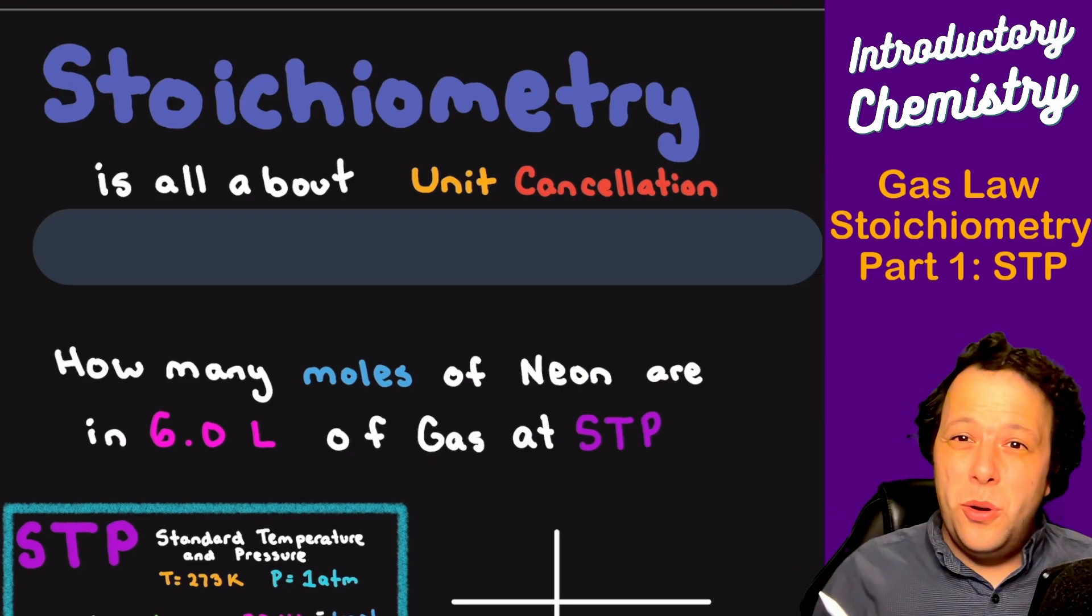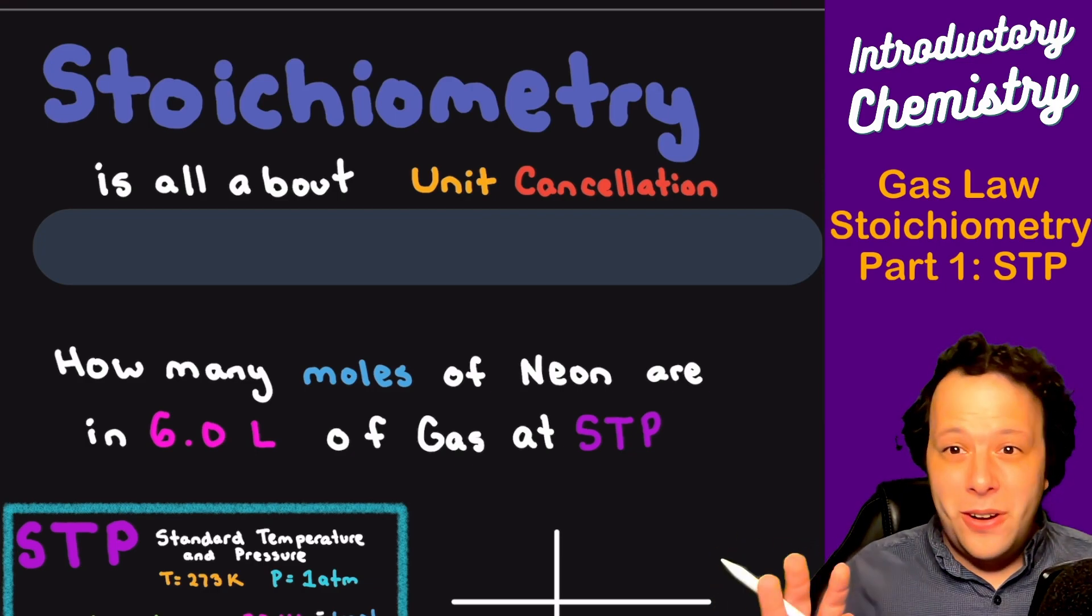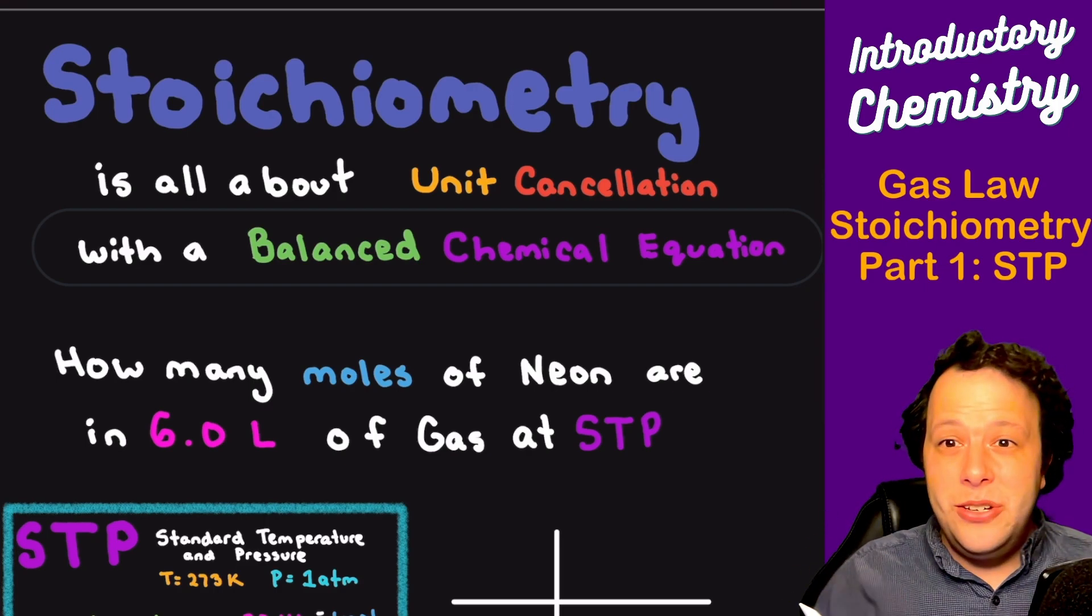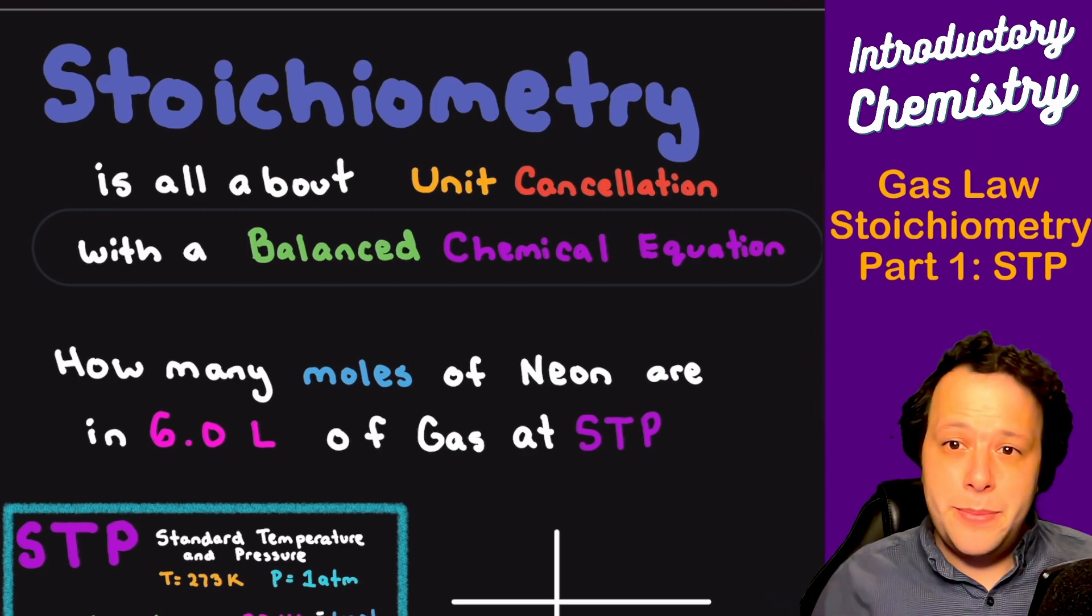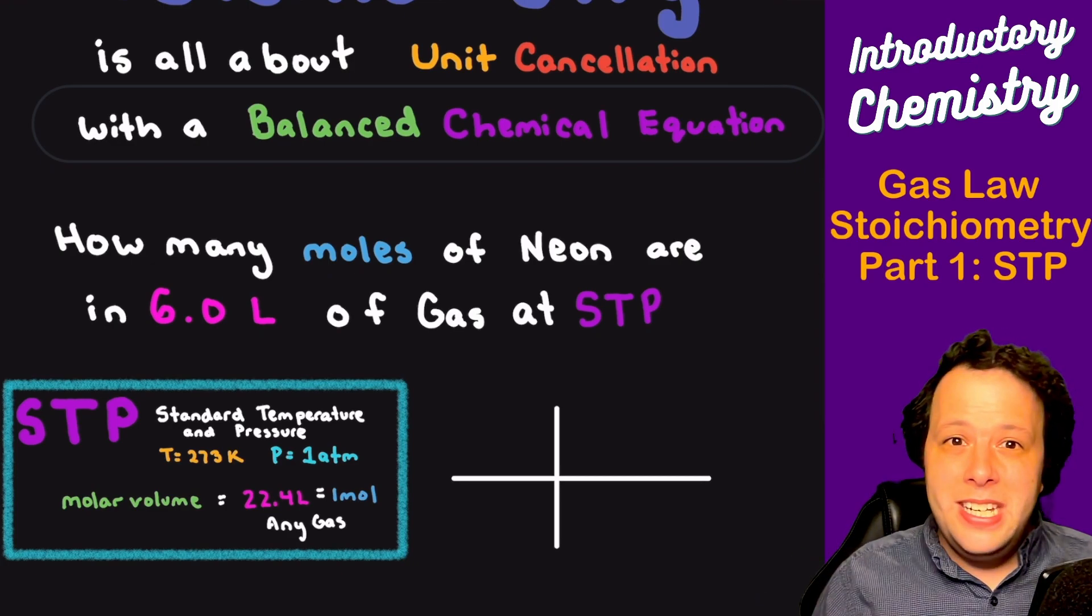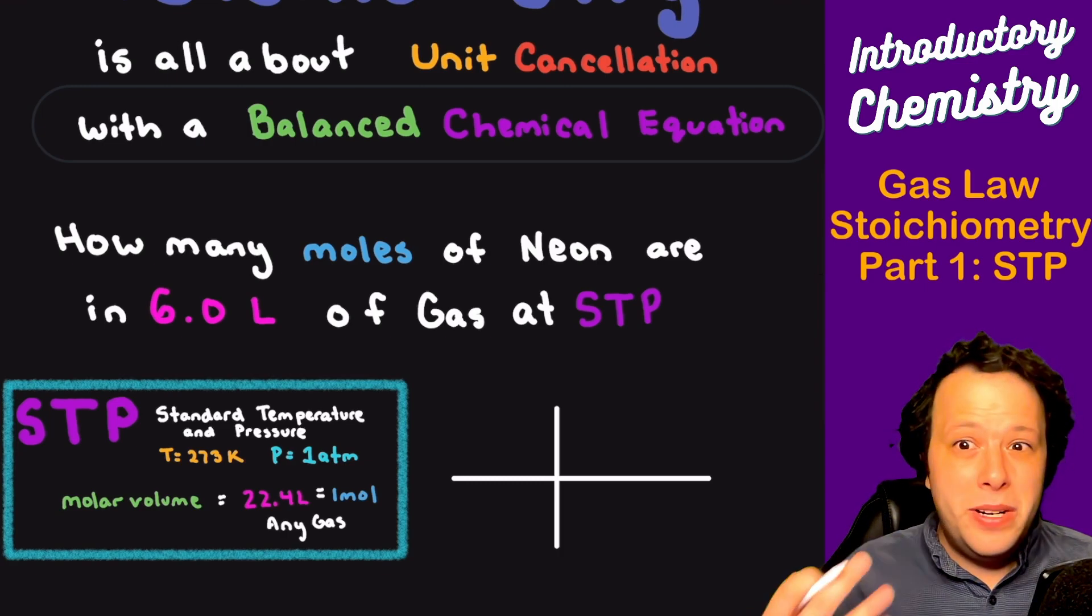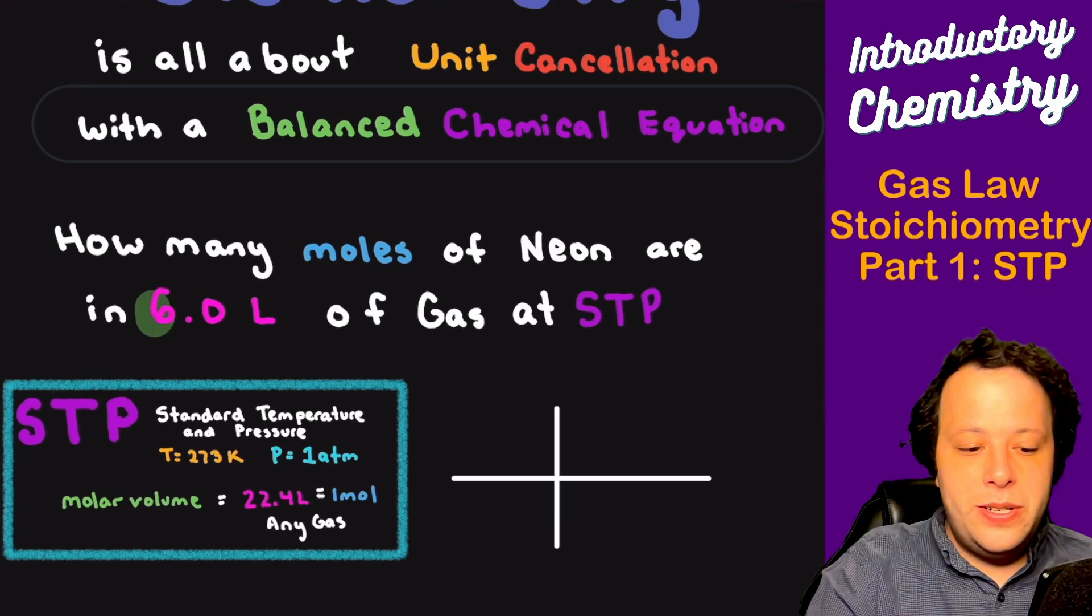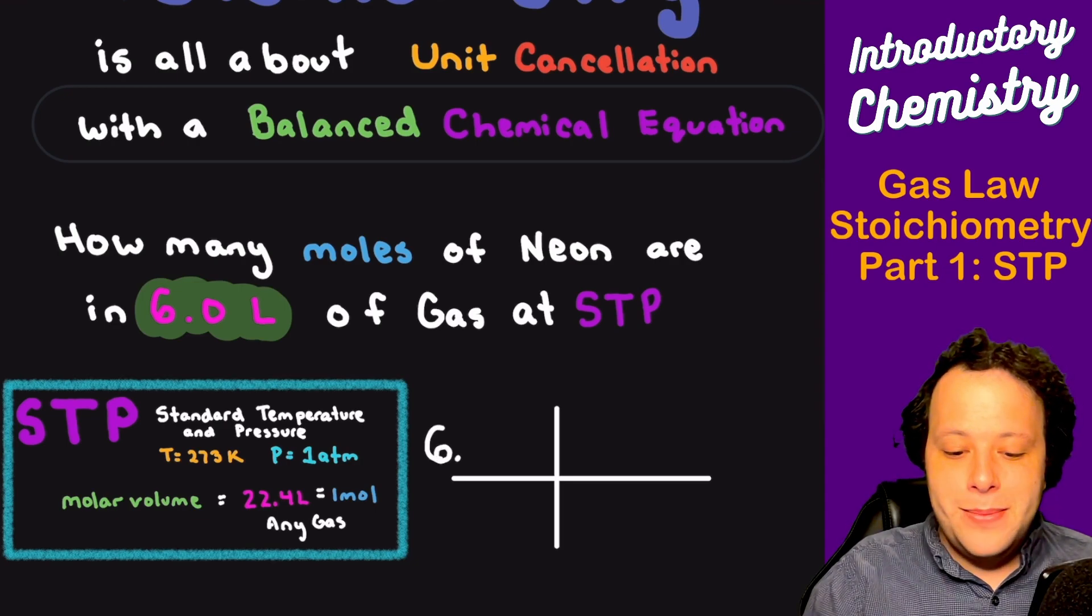When it comes to stoichiometry, the whole idea is that this is all about unit cancellation, same thing as dimensional analysis and most of the conversions you do in chemistry. Now stoichiometry generally uses a balanced chemical equation. But what we're going to start with is some problems that don't involve a chemical equation, just to get some of the basics to remind us of unit cancellation. The first problem is: how many moles of neon are in six liters of gas at STP? You're still doing unit cancellation but involving moles.